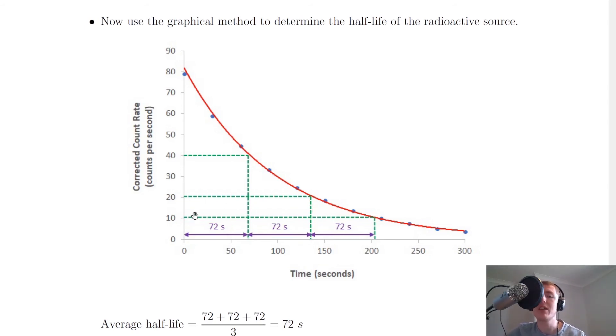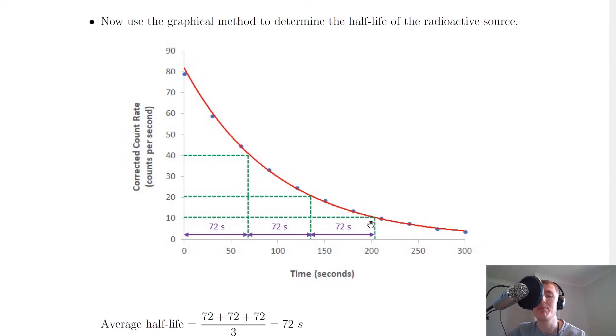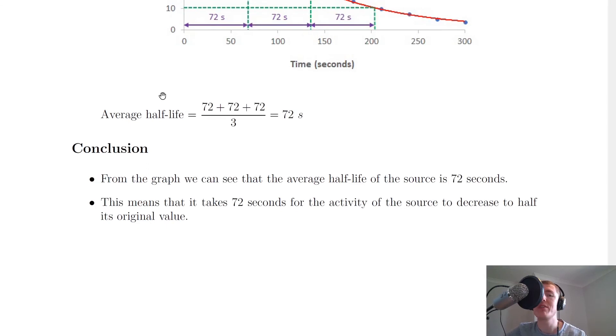And then the last half-life again, if we go from 20, half it down to 10, go along and down, we get another chunk of 72 seconds. So it's going to be pretty obvious what our average half-life is going to be because they're all the same. So in this case our average half-life is 72 plus 72 plus 72 divided by 3 which gives us a value of 72 seconds for our average.